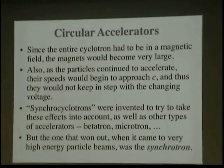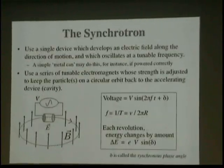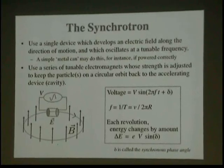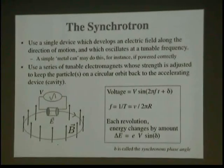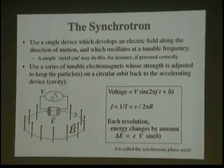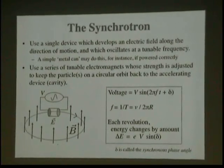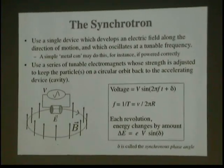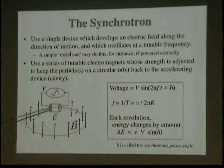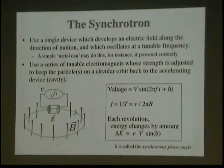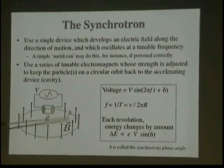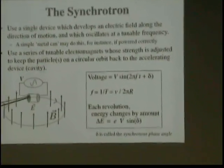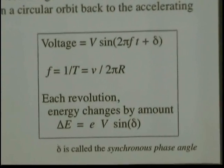The synchrotron keeps things in synchrony — and particle accelerator builders do like that '-tron' suffix. The synchrotron uses a single device to develop an electric field along the direction of motion, oscillating at a tunable frequency. Instead of a fixed frequency oscillator, we can adjust the frequency. Using a series of tunable electromagnets whose strength is adjusted to keep particles on a circular orbit, we can do acceleration. As particles gain energy and want to bend out, the magnetic field in those magnets becomes more powerful to keep them on the same orbit, while we change the cavity frequency to match the revolution period.